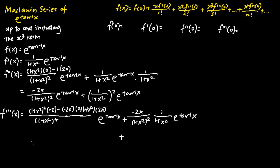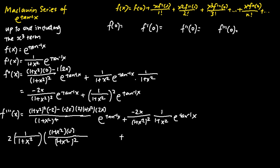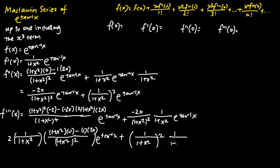Next, we differentiate the second term of f''(x). Applying the product rule of differentiation, we differentiate 1 over 1 plus x squared. We get 2 times 1 over 1 plus x squared, then applying the quotient rule to differentiate 1 over 1 plus x squared: square the denominator, bring the denominator to the numerator, differentiate 1 which is 0 since it is a constant, keeping 1, differentiating 1 plus x squared gives 2x, multiplied by e to the power of tangent inverse x. Then applying the second part of the product rule, we keep 1 over (1 plus x squared) squared and differentiate e to the power of tangent inverse x, giving 1 over 1 plus x squared times e to the power of tangent inverse x.